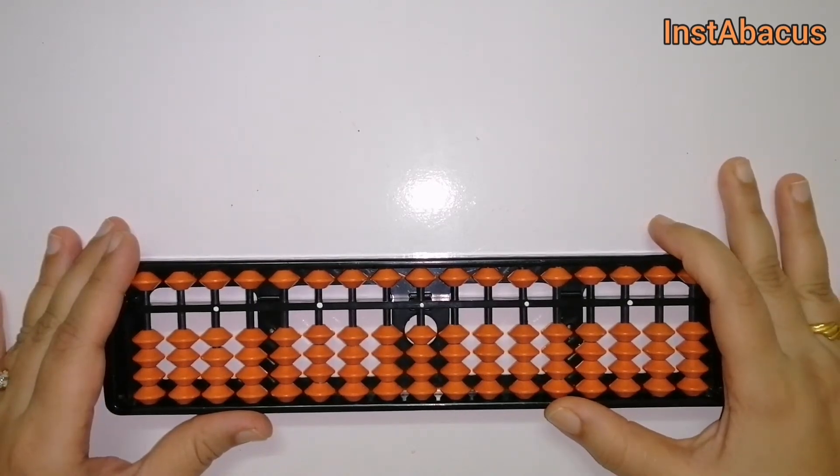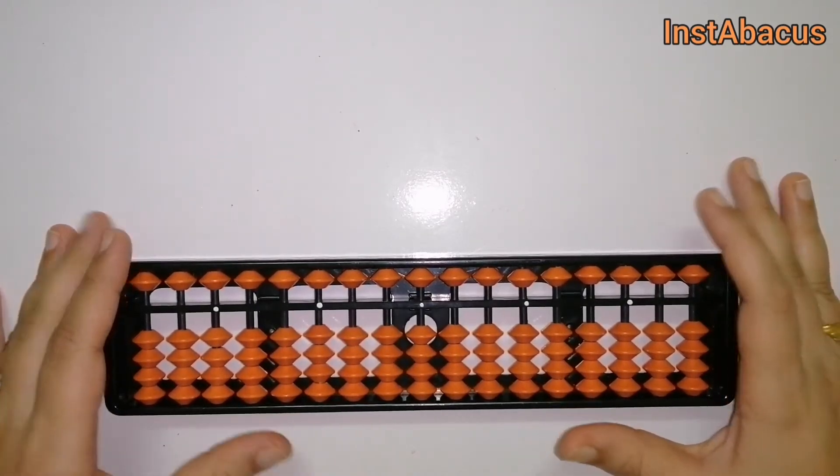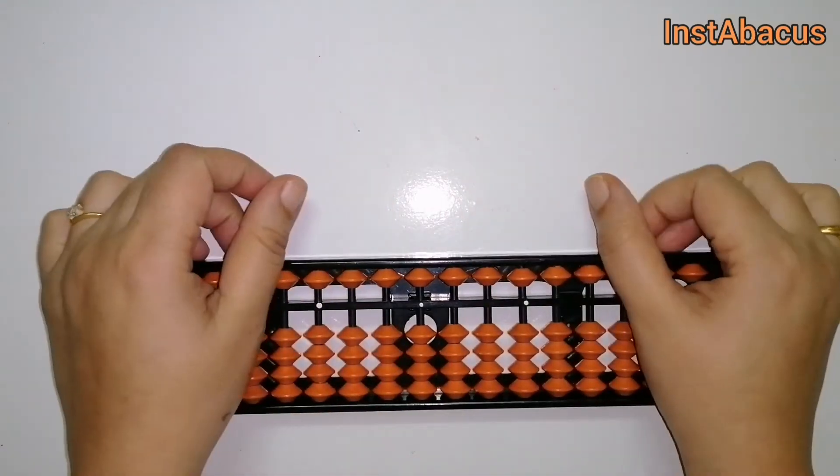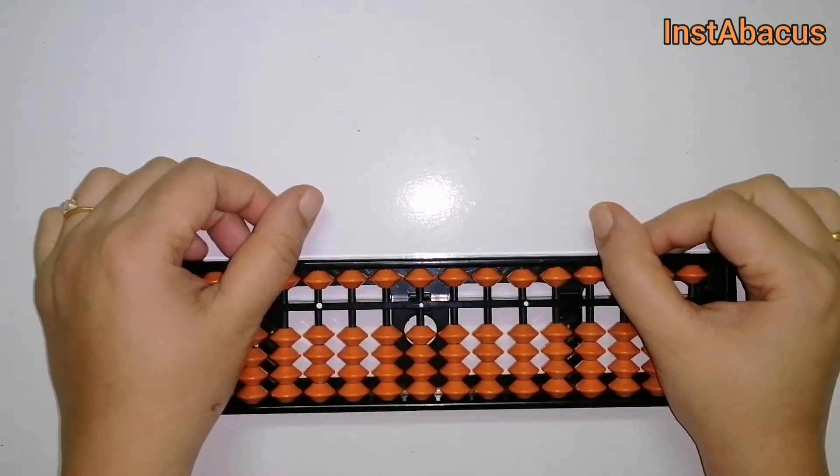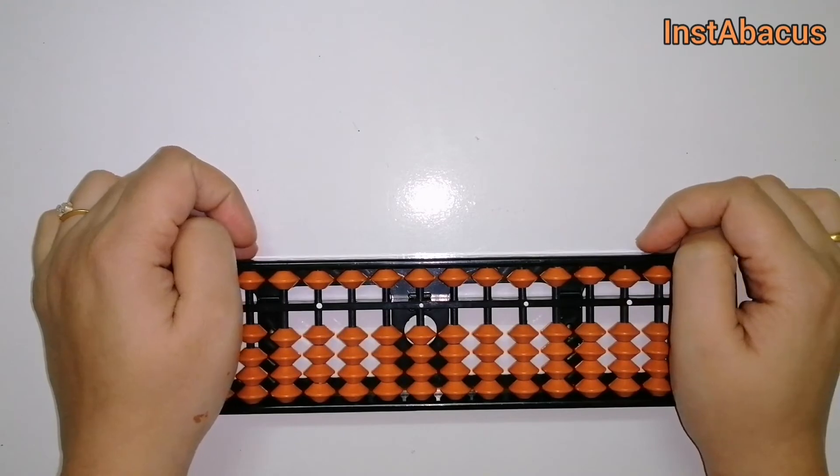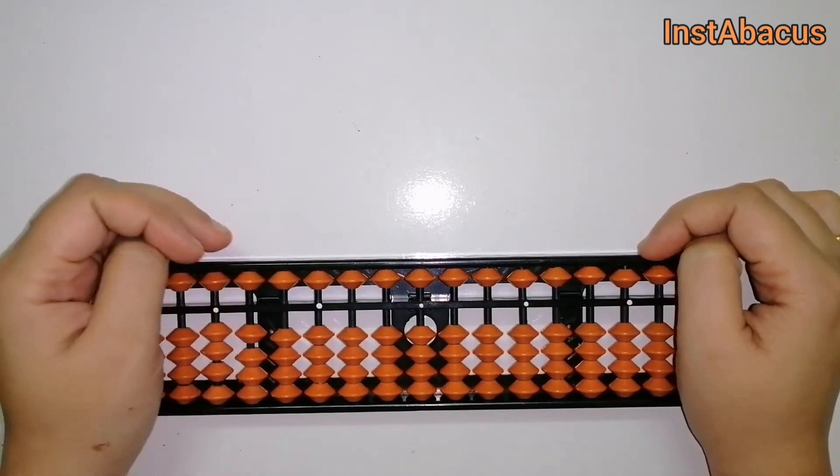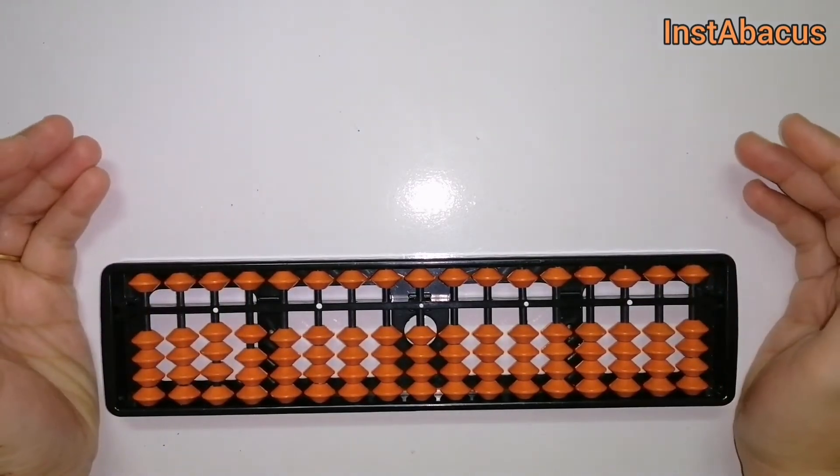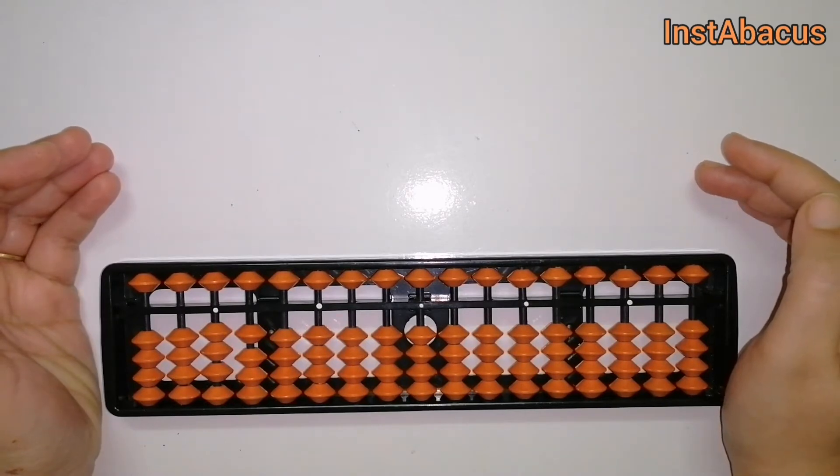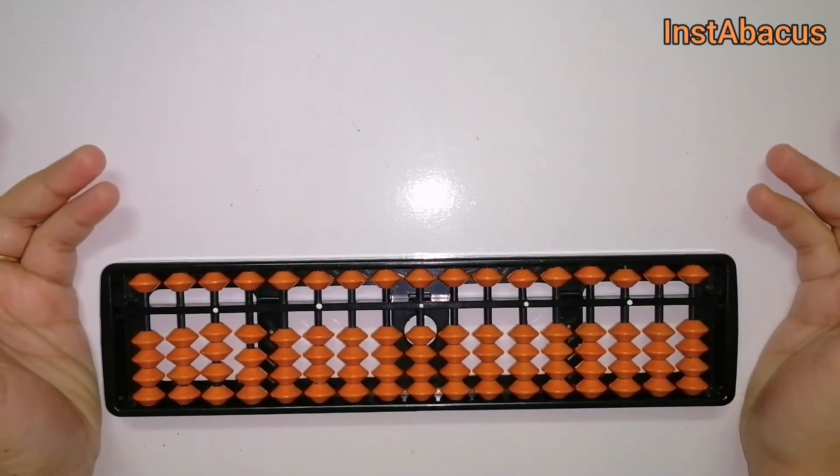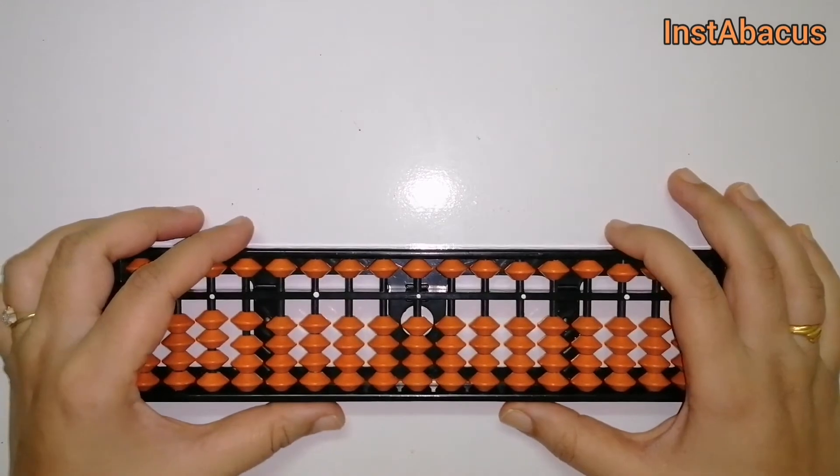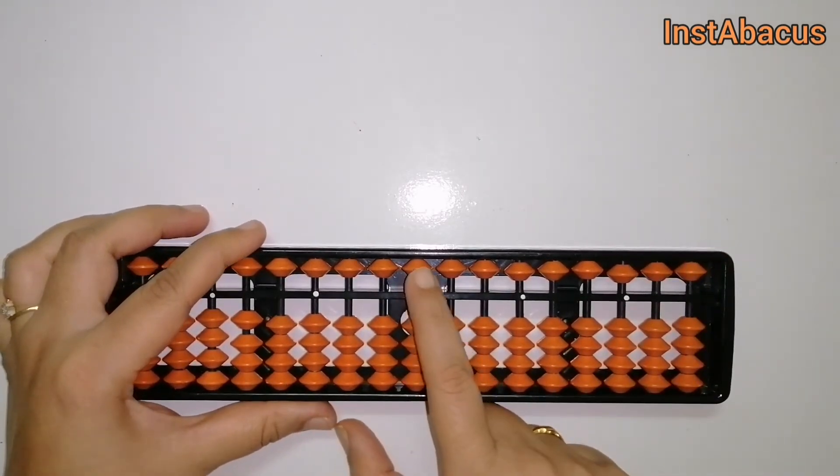Hello there, and today we are going to see something really important about abacus: small friends. You have probably been wondering, we do addition using small friends and big friends. What are these friends exactly? These are the friends that we use while adding and subtracting.